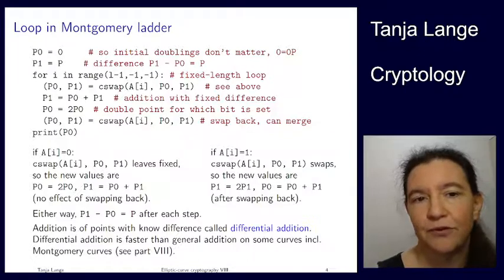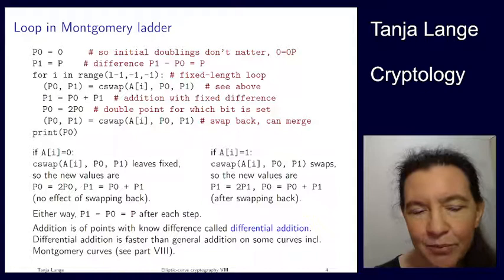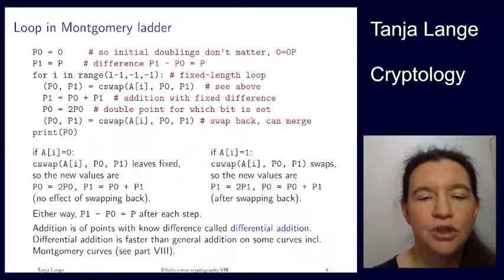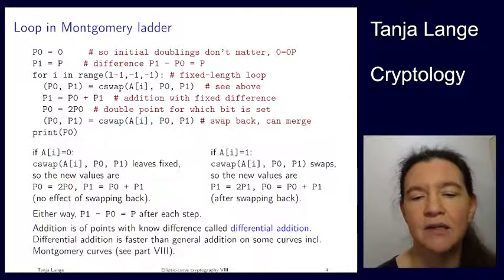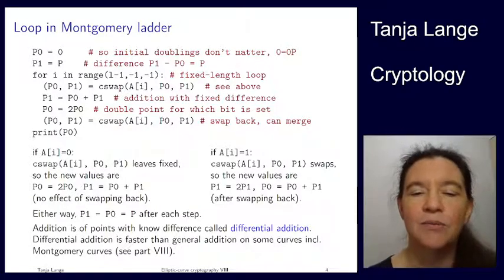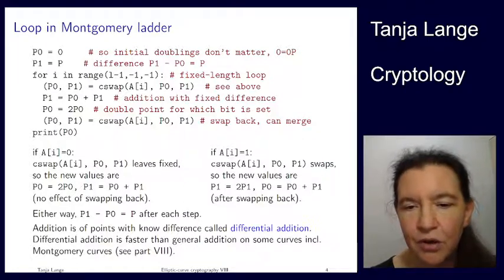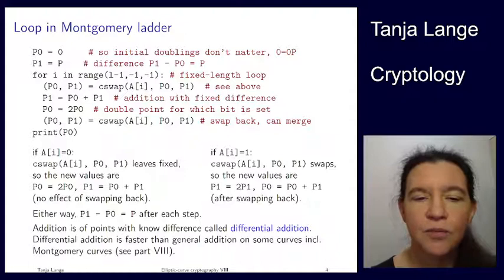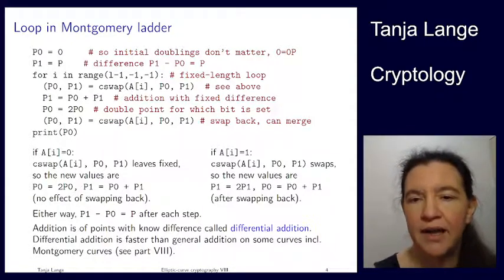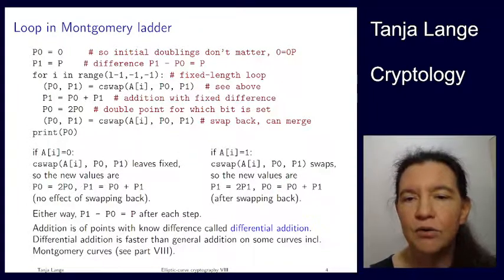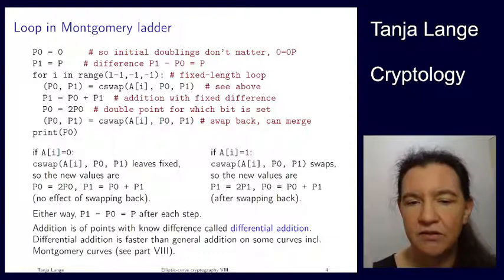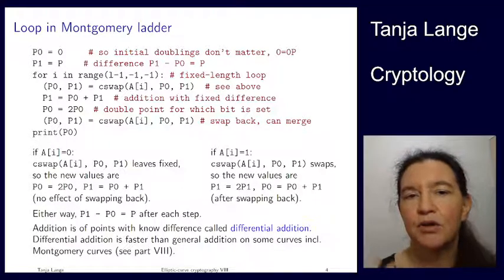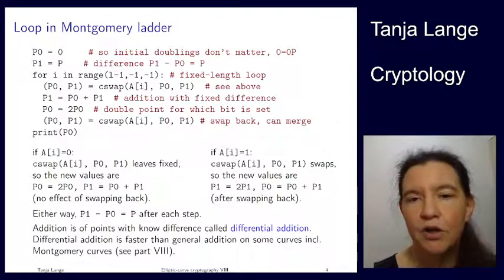And so, first of all, this shows that the Montgomery ladder does, in fact, compute the right point. But it also shows that we're getting what is called a differential addition. And I realize I didn't update this. It's actually part 9, because what we're currently looking at is part 8. So in part 9, I'm going to show you differential addition on Montgomery curves, which is actually faster than general addition on Montgomery curves. So differential addition is addition of points where the difference is known. And in this Montgomery ladder, we have a known and also fixed difference. So the difference P1 - P0 is always the same point P, so that it's known and it's fixed. And that makes the Montgomery ladder for Montgomery curves one of the typical ways we do implement elliptic curve cryptography.